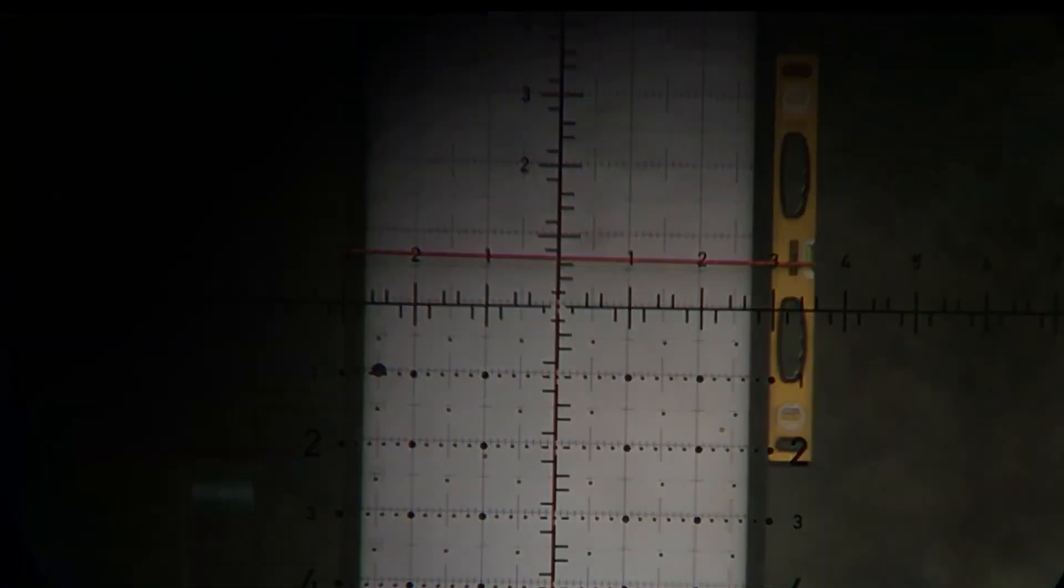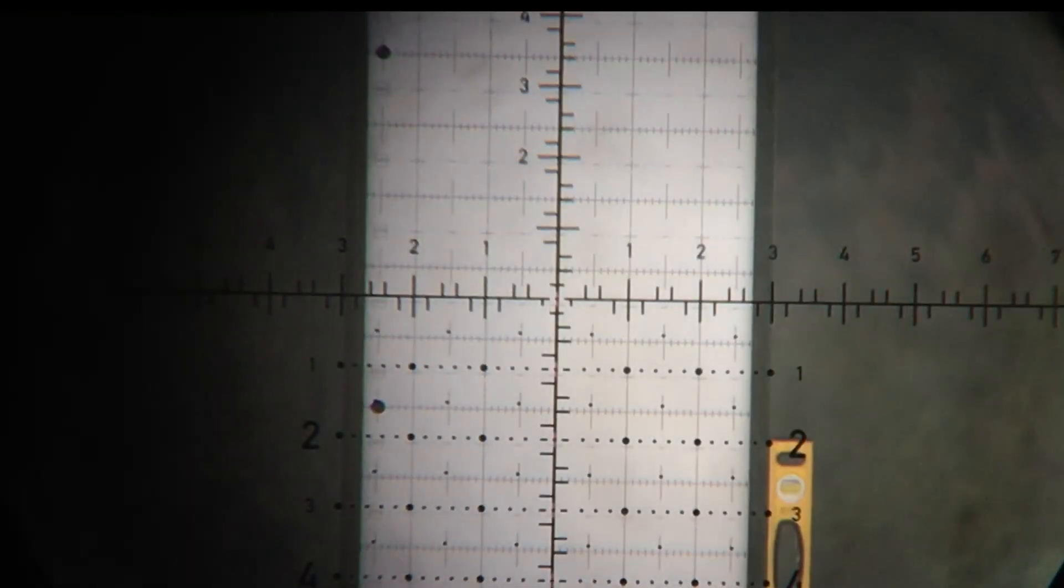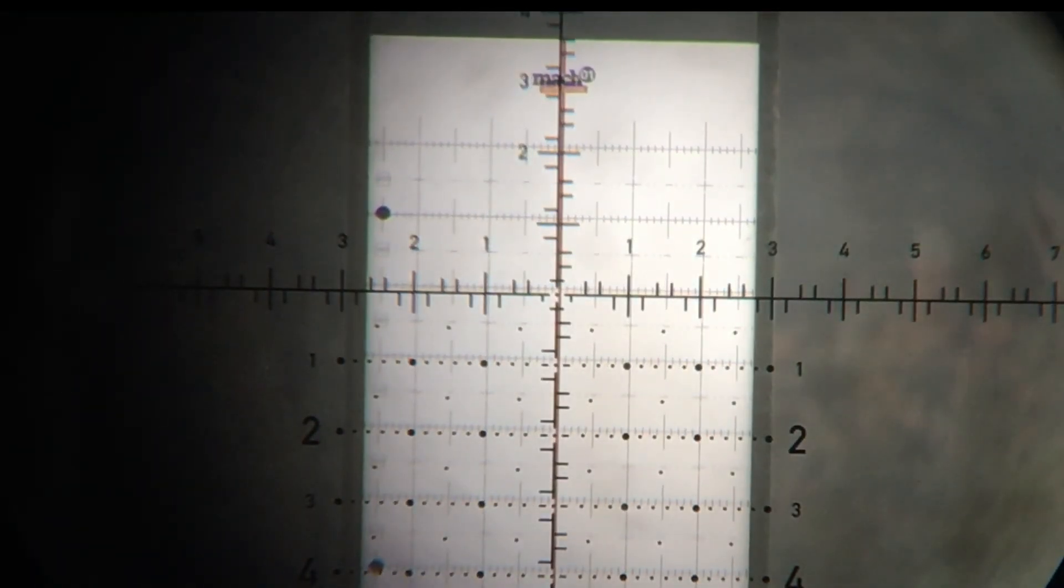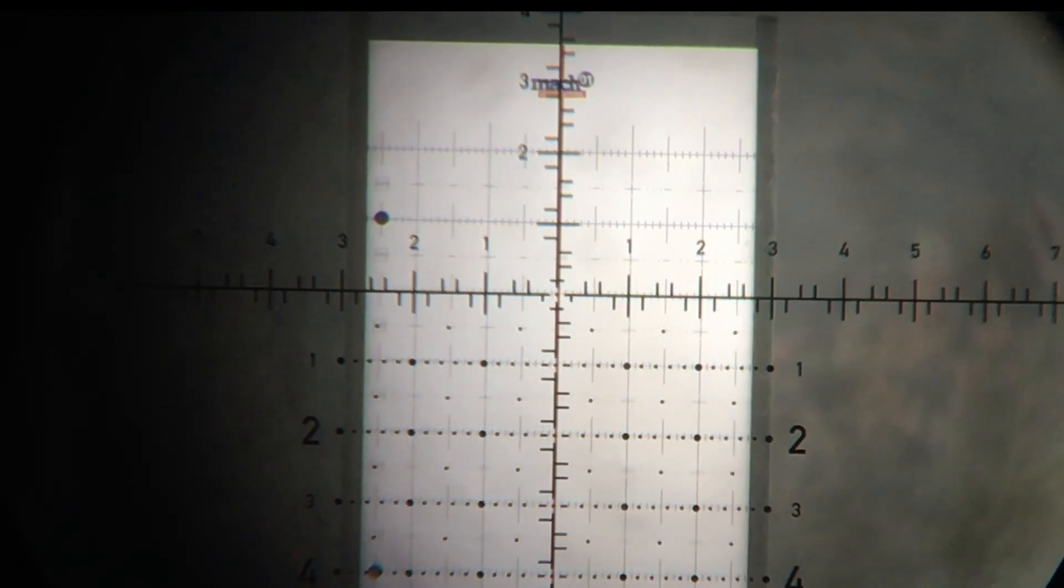Another thing is to be very mindful of not pressing down on the turret when doing the Tall Target Test but only turning the elevation turret. I almost made this mistake as you see here and I was very close to recording a scope tracking error that actually wasn't there.